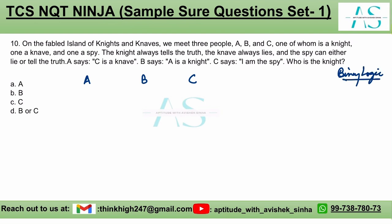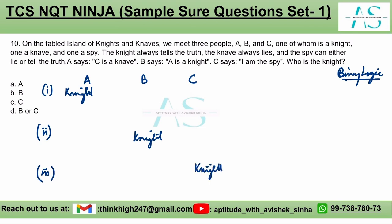These types of questions are categorized under the topic of binary logic. If you want to prepare for such questions, study the reasoning topic of binary logic. We start by assuming the first person to be the knight, then assume B to be the knight, and finally assume C to be the knight — that is how we proceed.